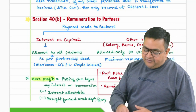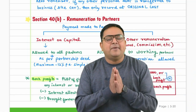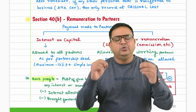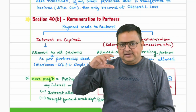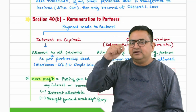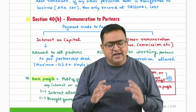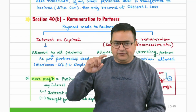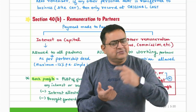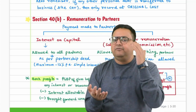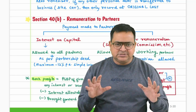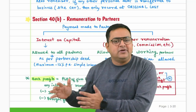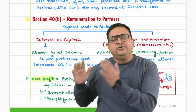Next is Section 40(b) — remuneration to partners. If the assessee is a partnership firm, it can pay certain remuneration to its partners, but there is a restriction on the amount. Remuneration can be in the form of salary, bonus, commission, or interest on capital. First, let's look at interest on capital: it can be paid to all partners as per the partnership deed, including sleeping partners, since they have invested money in the business.